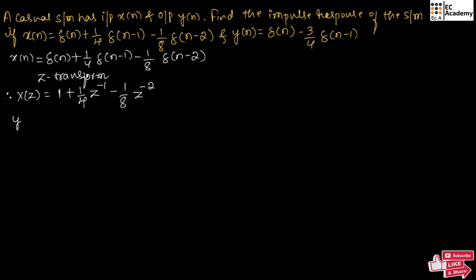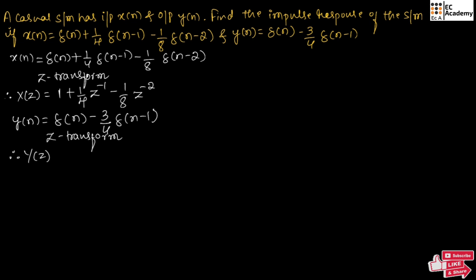Now let us consider y[n], given as delta[n] minus 3/4 delta[n-1]. Again, let us take the Z-transform of this equation. Therefore, we can write Y(z) equal to: delta[n] written as 1, minus 3/4 delta[n-1] written as Z⁻¹.